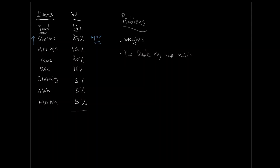Another problem: the typical bundle assumed by Statistics Canada may not match your bundle. If your shelter expenditure is closer to 40% rather than the assumed 27%, and shelter is growing faster than everything else, then their CPI measurement will be very different from your actual cost of living. Depending on what you consume, your cost of living might be accelerating faster — or slower — than the national average.